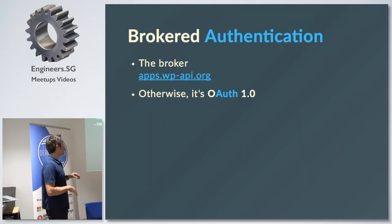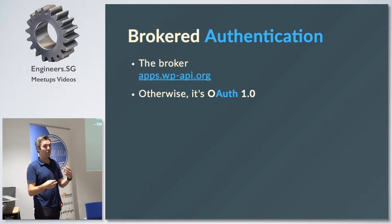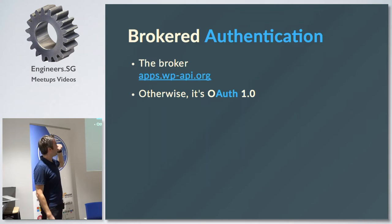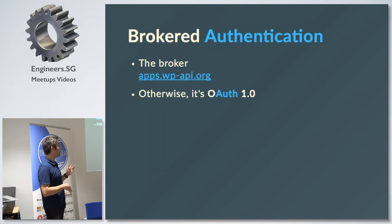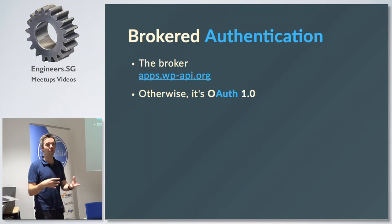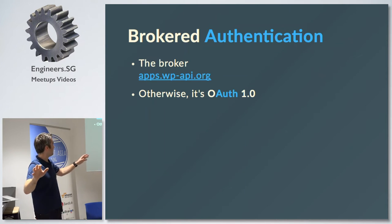The REST API team has been working on what they call brokered authentication. In this system, the REST API team acts as the broker — they store the data, you authenticate with them, and they authenticate with your website. When you want to authenticate they send you the token and handle all the security, and they're HTTPS. If you go to apps.wpapi.org, you can set it up for free. The software is also open source, so you can run your own broker — like apps.yourwebsite.com on HTTPS — and all your other properties can carry on working.